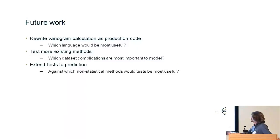So future work. I'm in the process of rewriting the variogram calculation code as production standard code, so I'd be really interested in which languages would be most useful. At the moment it's in R with a tidyverse idiom, but obviously there's lots of scope to improve that and make it useful to people. I'd like to test a few more additional existing methods, so the fixed rank kriging for instance. And then it's important that I'm modeling datasets which have the same sort of complicated process as real datasets, so that I know that these tools might work in the real world.